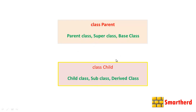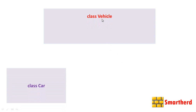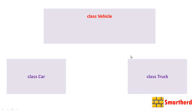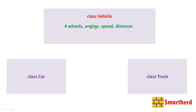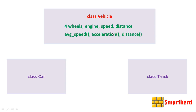Let's look at another example. Say we have a class Vehicle, a class Car, and a class Truck. Car and Truck are both vehicles — that is the common thing between them. Inside the class Vehicle, we can define common properties: four wheels, engine, speed, distance, and methods to calculate average speed, acceleration, and distance.